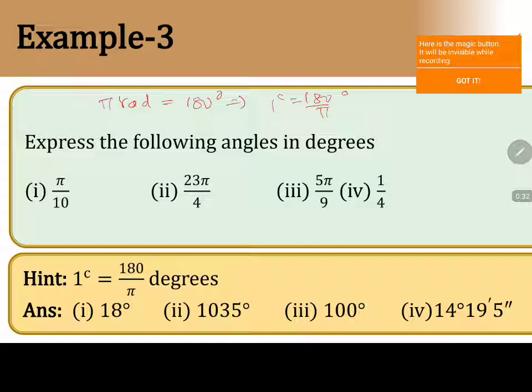Let me take up the first one. Multiply the given radian with 180 by pi. Pi by 10 multiplied by 180 by pi will give us 18 degrees. 10 cancels, pi cancels. Similarly,